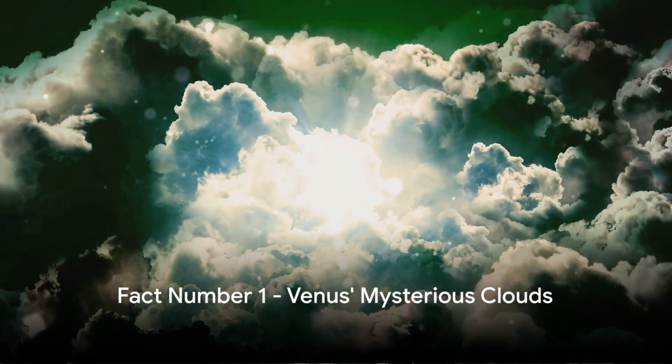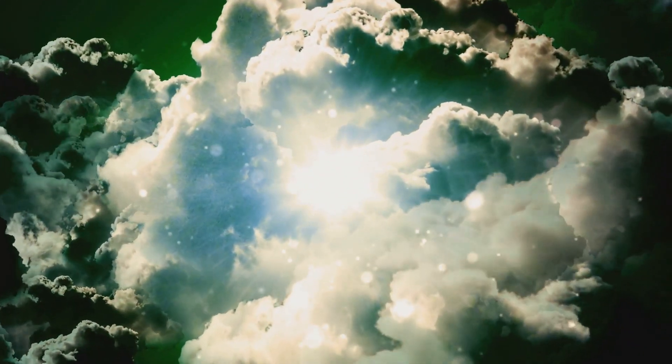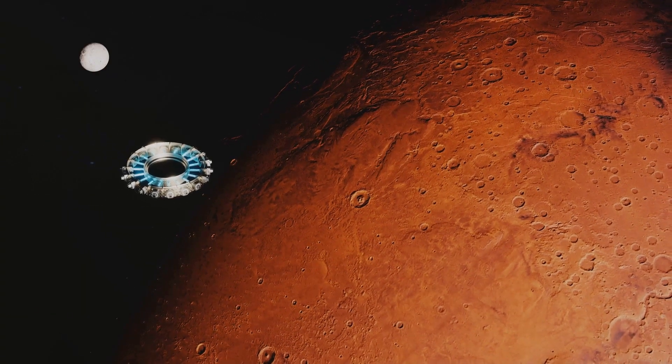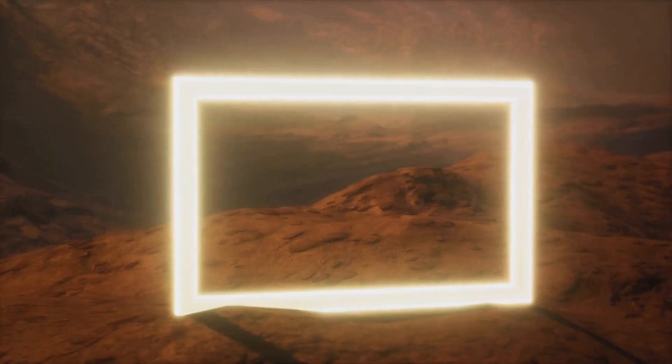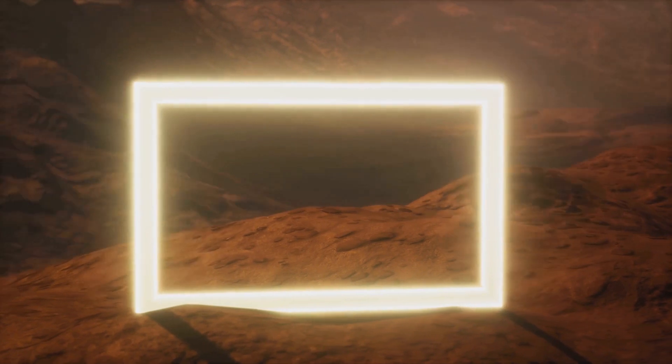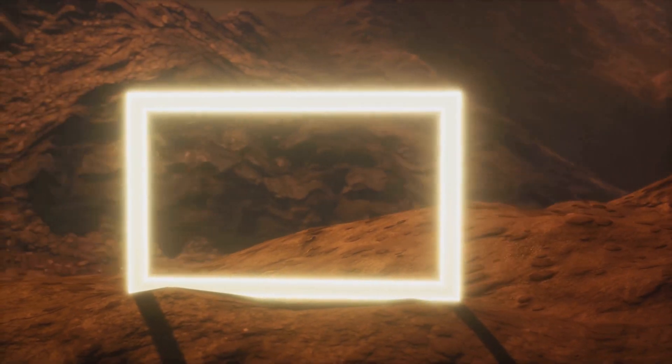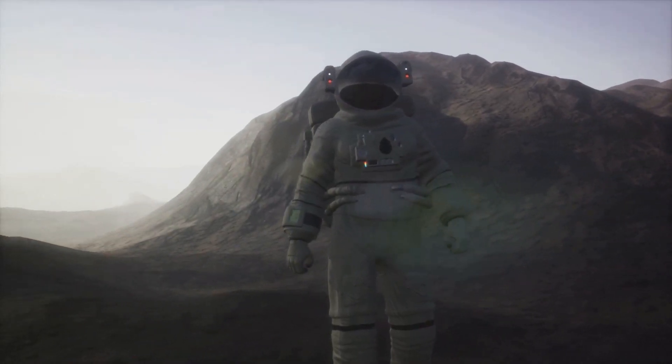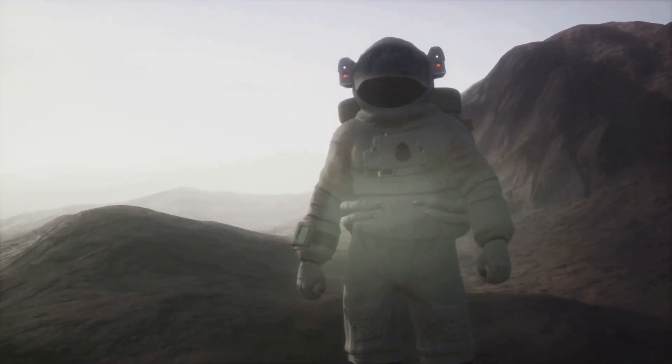And finally, the number one mind-blowing fact about Venus, its mysterious clouds may harbor life. Yes, you heard that right. In the swirling sulfuric clouds of Venus, a recent discovery has sparked a wave of excitement and curiosity in the scientific community. Phosphine, a gas typically produced by microbes that thrive in oxygen-starved environments, has been detected in the planet's atmosphere. This intriguing revelation has led to speculation about the existence of life on Venus, albeit life as we don't yet know it.